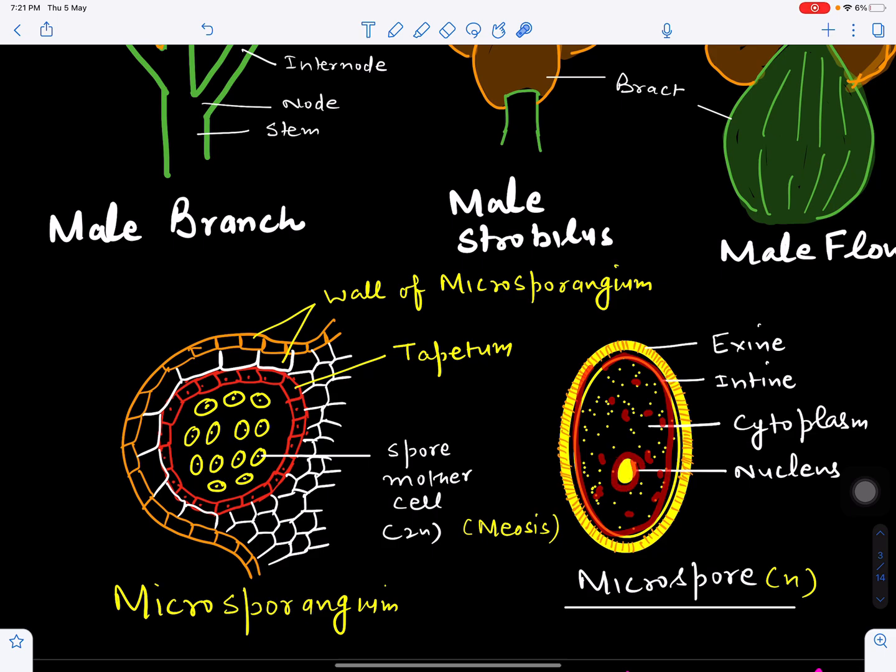These microspores later germinate to form the male gametophyte in Ephedra, which we will discuss in a separate video. This concludes the structure of the male cone. In the next video, we will discuss the structure of the female cone.